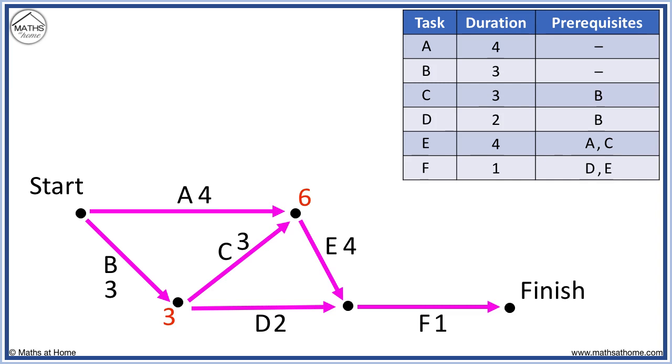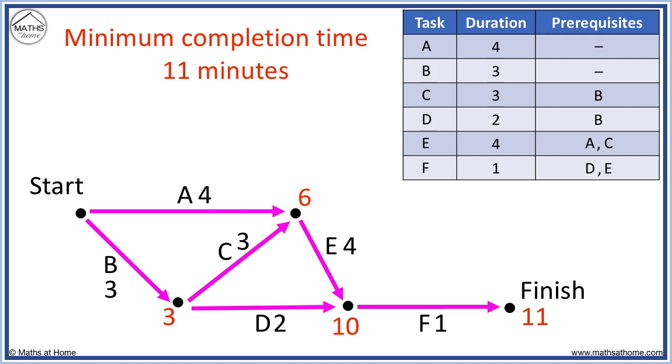At the next node, we have a choice of 6 plus 4 equals 10 or 3 plus 2 equals 5. We write 10. Finally, we have 10 plus 1 equals 11 and so the minimum completion time is 11 minutes.